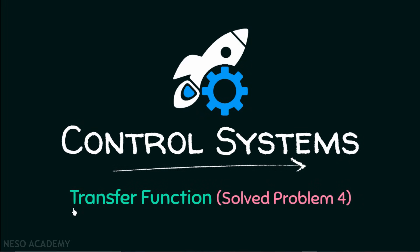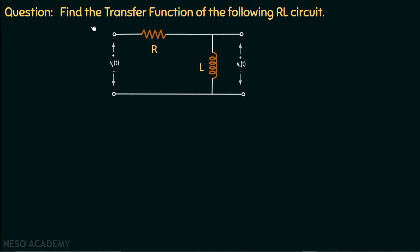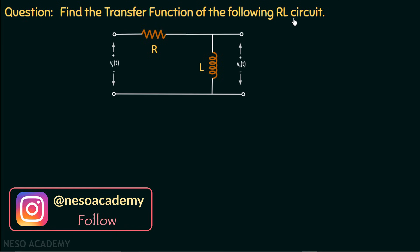In this presentation we are going to solve problem number four based on transfer function. Find the transfer function of the following RL circuit. The RL circuit is given to us. The input voltage Vi(t) is given to the circuit and the output voltage Vout(t) is measured across the inductor.